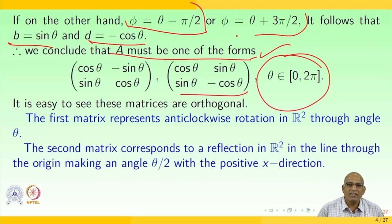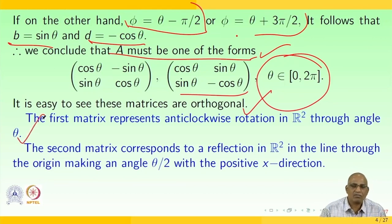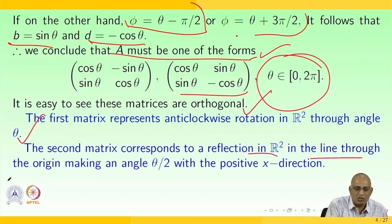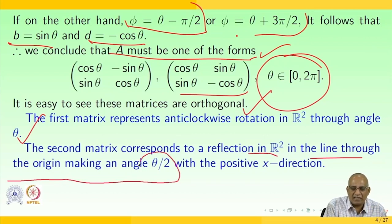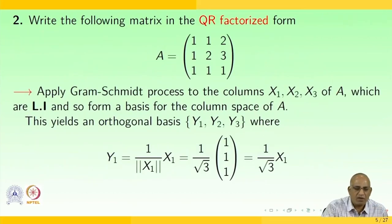It is easy to see these matrices are orthogonal. The first matrix represents an anti-clockwise rotation in ℝ² through angle θ. The second matrix corresponds to a reflection in ℝ² in the line through the origin making an angle θ/2 with the positive x direction. Now let us look at the second example: write the following matrix in the QR factorization.